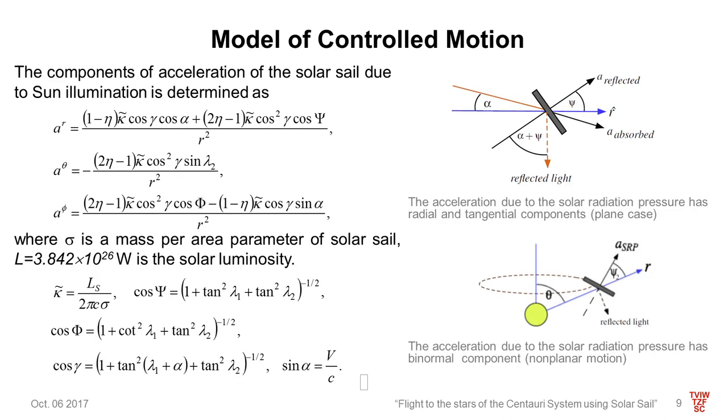The right side of motion equations consists of the dynamic equation and the components of acceleration from the solar sail. These components will be determined by equations. Here, Psi is the angle between the normal direction of the surface of the solar sail, N, and the radial direction. Large Psi is the angle between N and the transversal direction. Gamma is the angle between N and the direction of the solar radiation. Sigma is the mass per area parameter of the solar sail. Alpha is the angle between the solar radiation propagation and the radial direction in the special relativistic framework.